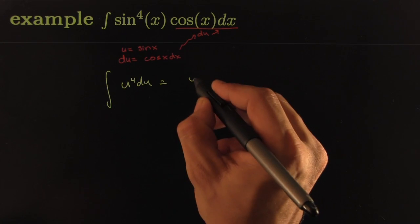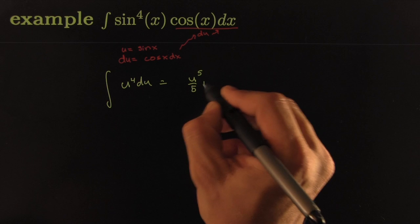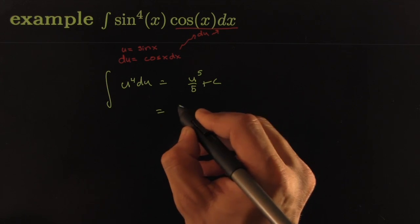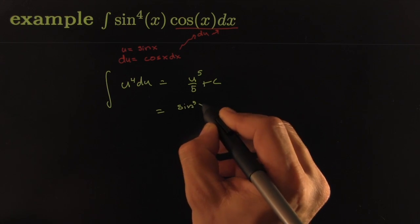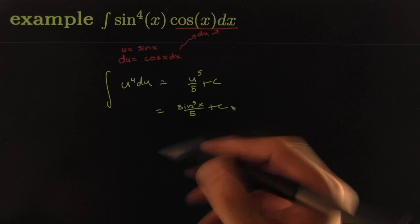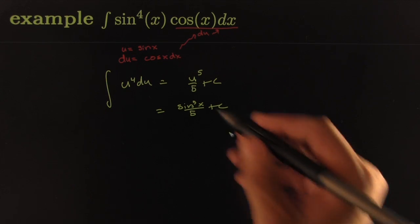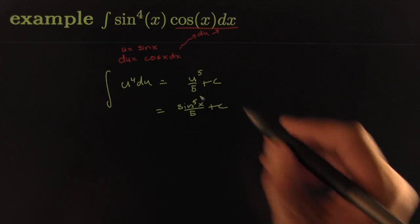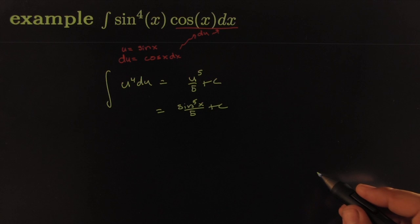And of course that's just a power rule. So that becomes u to the 5 over 5. That's a constant. That becomes sine to the 5th x over 5 plus c. And of course then you're done. That was way too easy.